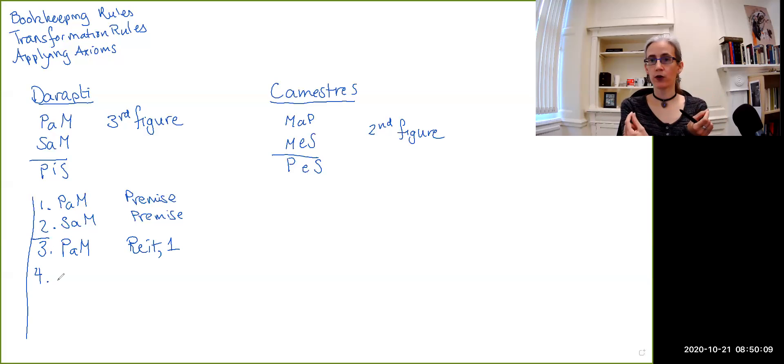Now if you remember, accidental conversion is when you swap the order of the subject and predicate terms and then you change from a universal copula to the corresponding partial one. So we start off with SaM. If I swap the order of the premises, I then have M and S, and then I change this a copula to the corresponding partial copula, so I get i. So line four is MiS, and this is accidental conversion of line two.